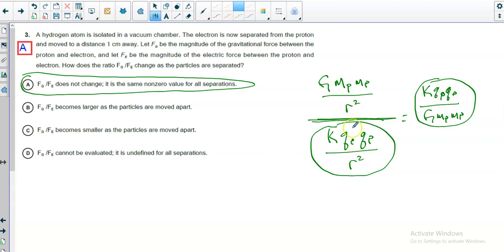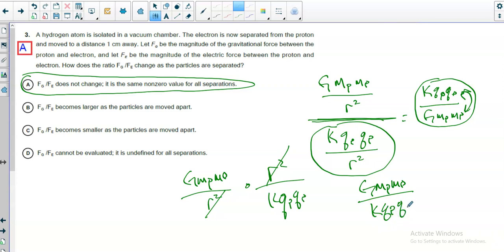You double-check your algebra. When we flip and multiply, the R squareds will cancel. So I should have G, mass of proton, mass of electron, times R squared over K, Q proton, Q electron. The R squareds will cancel. This would be the actual ratio, but it'd still be constant. So my conclusion wouldn't have changed, even though I messed up my algebra.